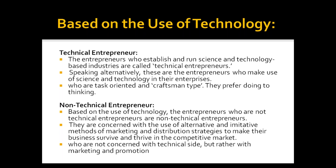Next, based on the use of technology, there are two types: technical entrepreneurs and non-technical entrepreneurs. Technical entrepreneurs are those who establish and run science and technology-based industries. They are more involved in the doing side of the process — implementation and execution of planned things. They are craftsman types, task-oriented people who make use of science and technology in their enterprises.